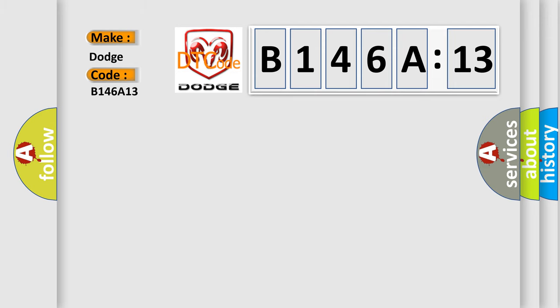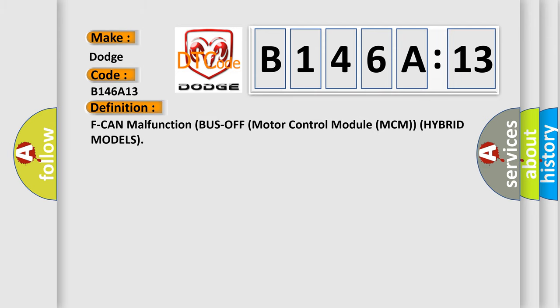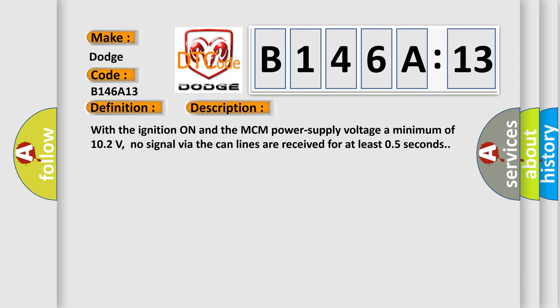The basic definition is: F can malfunction bus off motor control module MCM hybrid models. And now this is a short description of this DTC code. With the ignition on and the MCM power supply voltage a minimum of 102 volts, no signal via the CAN lines are received for at least 05 seconds.